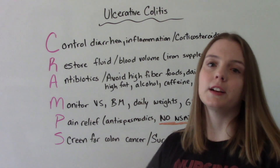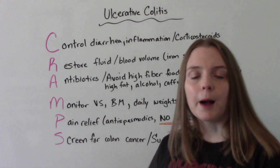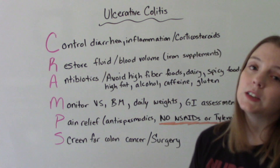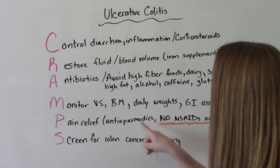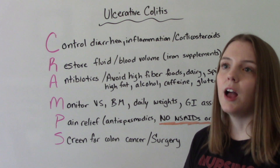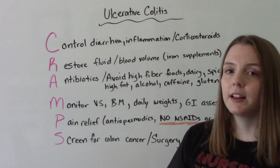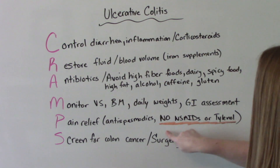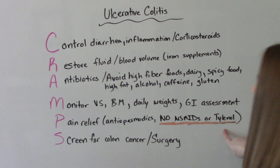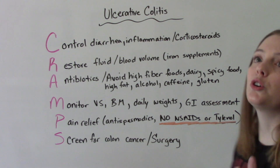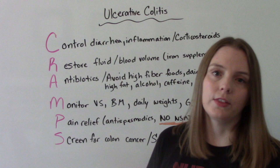P is for pain relief, because they have abdominal cramping and might have rectal pain. We can use antispasmodics to help with abdominal cramping, and other medications for rectal pain. But we need to make sure no NSAIDs and no Tylenol — it's not safe for them to have these medications because they can increase the bleeding.